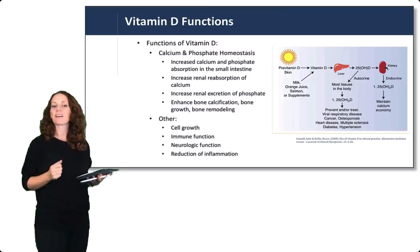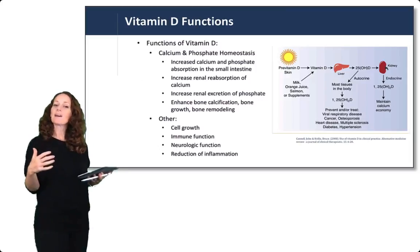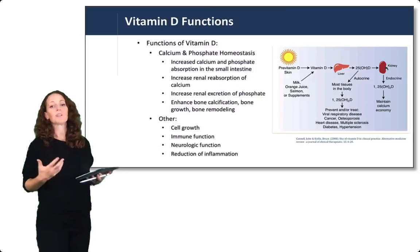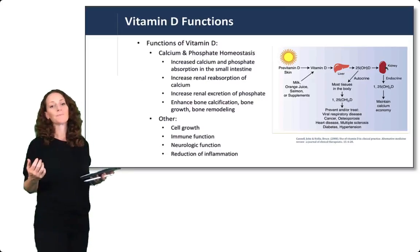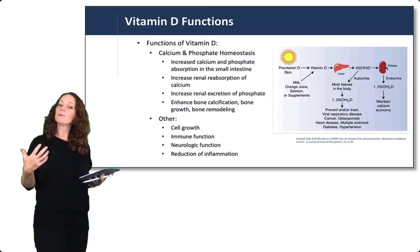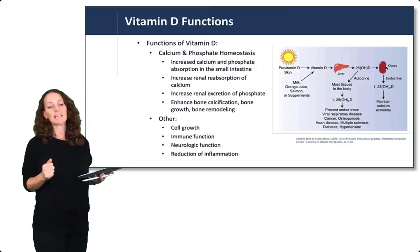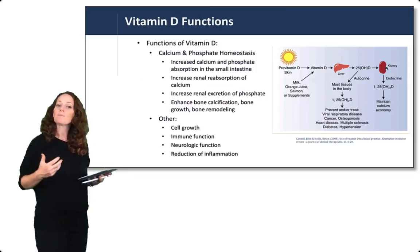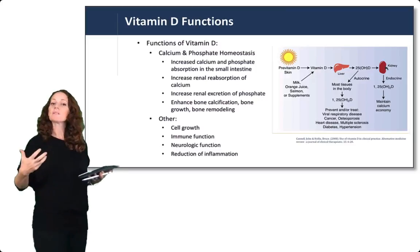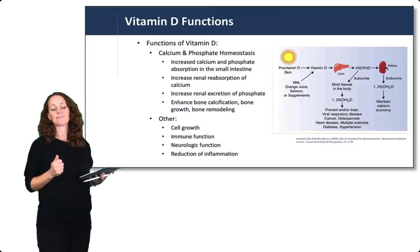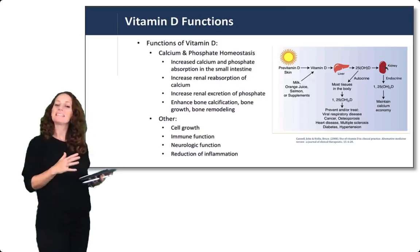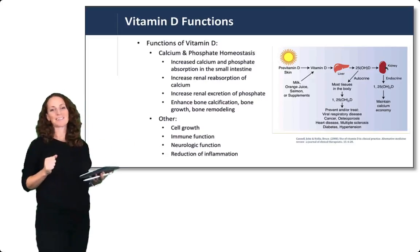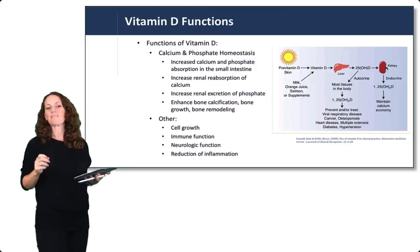Increased levels of vitamin D increase calcium and phosphate in the blood through absorption in the small intestine. It also works together with parathyroid hormone. Parathyroid hormone can activate vitamin D, increase renal reabsorption of calcium, and increase renal excretion of phosphate. We talked about parathyroid hormone and vitamin D back in the calcium lecture.